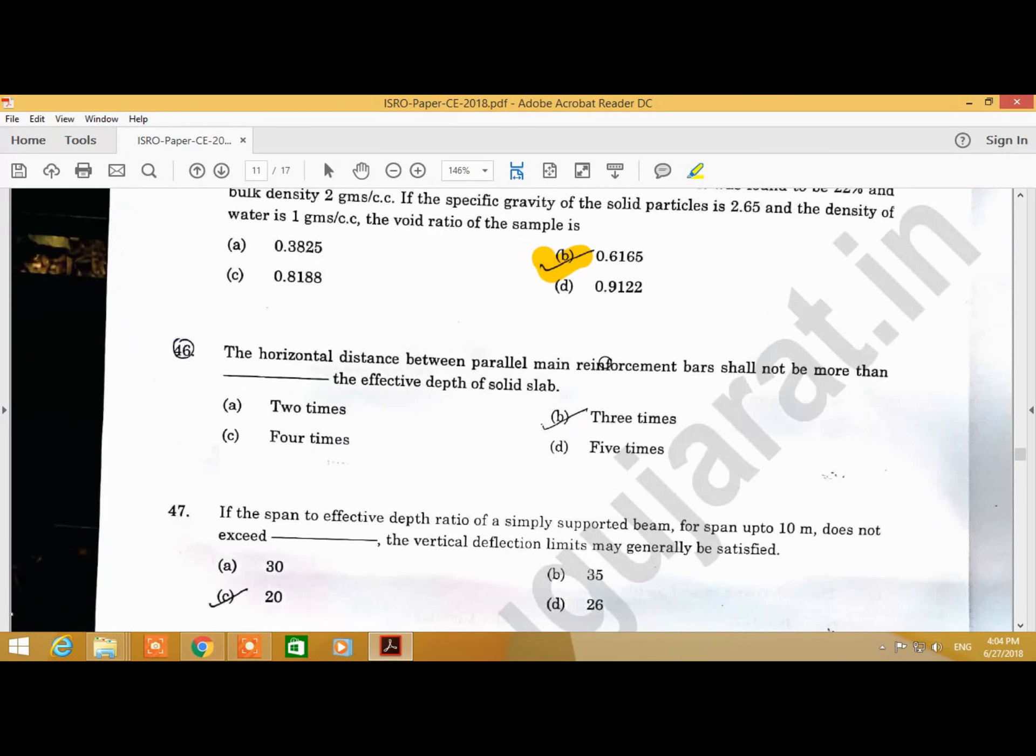Question Number 46: The horizontal distance between parallel main reinforcement bars shall not be more than the effective depth of the solid slab. Answer is B, three times.